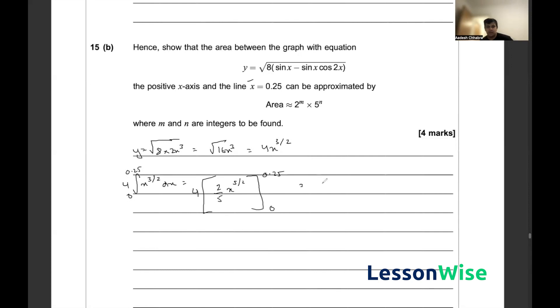That'll be 8 by 5 times 0.25 to the power of 5 by 2, and I can rewrite this as 8 by 5 times 1 by 4 to the power of 5 by 2.